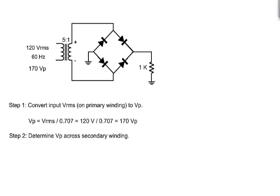Next, we must determine the peak voltage across the secondary winding of the transformer. Because the turns ratio of this transformer is 5 to 1, that means the output voltage will be one-fifth of the input voltage. Dividing 170 peak volts by 5 gives us a secondary output of 34 peak volts.